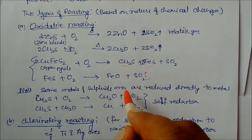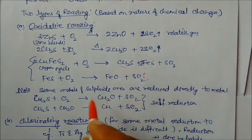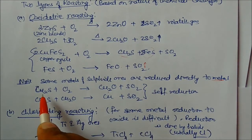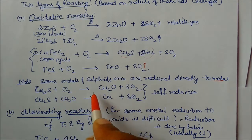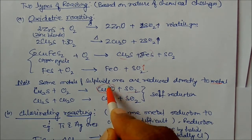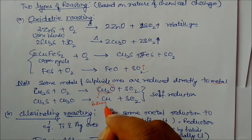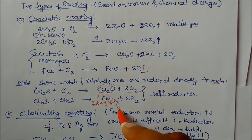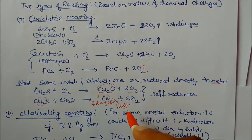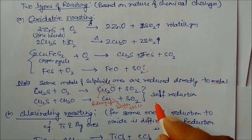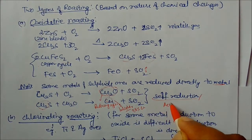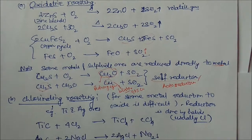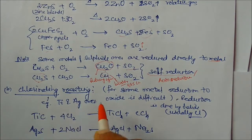Some metals from sulfide ores are reduced directly to metal through self-reduction or auto-reduction. For example, copper glance (Cu2S) on roasting converts to Cu2O plus sulfur dioxide, then Cu2O acts as a reducing agent and combines with more copper glance to give copper directly. This copper is called blister copper, which is approximately 98% pure copper. This process is called self-reduction or auto-reduction.